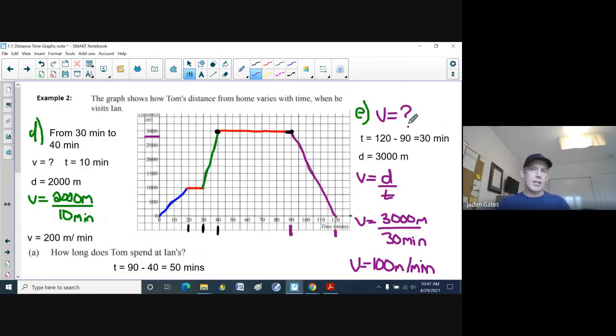So that's a distance time graph. If we're reading information, if you have a slope of zero, there is no speed. But if there is a slope, we can use that slope to find the velocity of an object by using a distance time graph. Thank you.